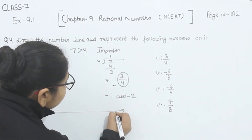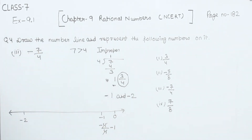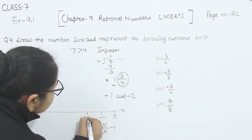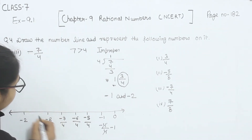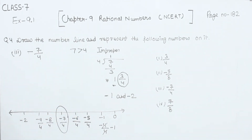So on the number line, this is 0, this is minus 1, and this is minus 2. I need to represent 3 by 4 on this segment. Minus 1 can be written as minus 4 by 4. Dividing further: minus 5 by 4, minus 6 by 4, minus 7 by 4, minus 8 by 4, minus 9 by 4, and so on. So we have to represent minus 7 by 4 on the number line — this is the minus 7 by 4, lying between minus 1 and minus 2. This is part 3.